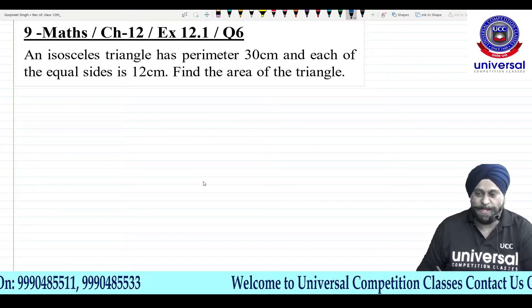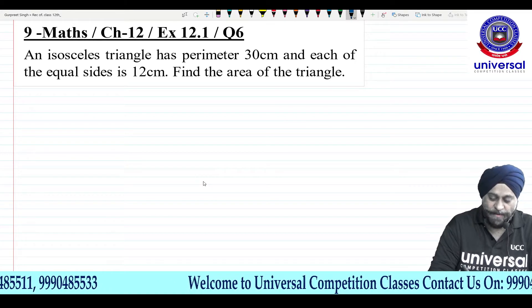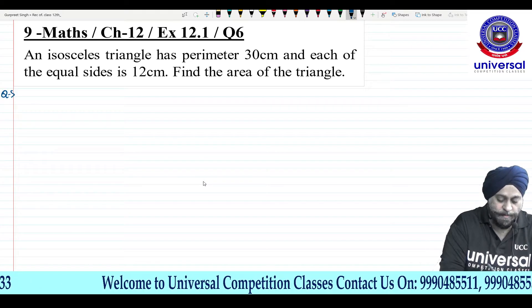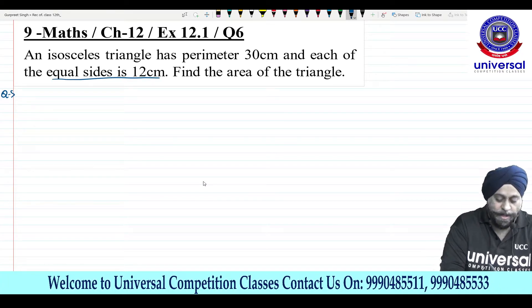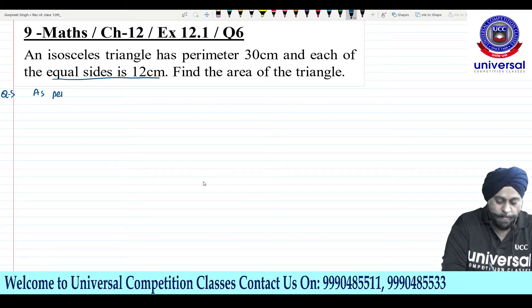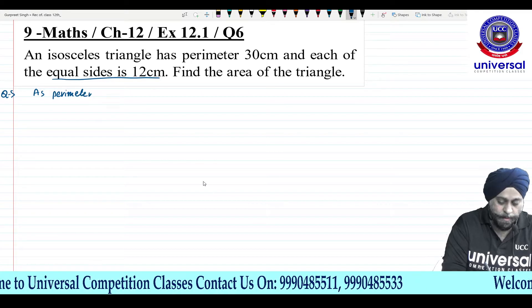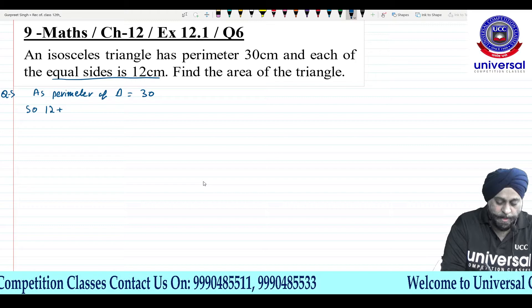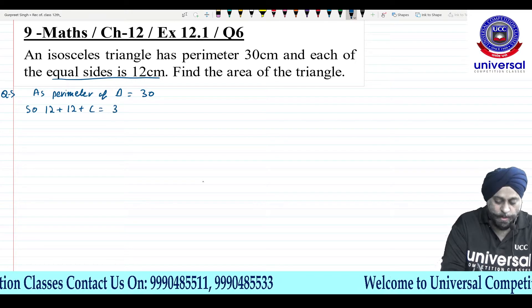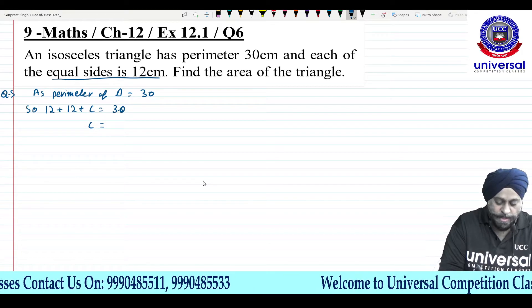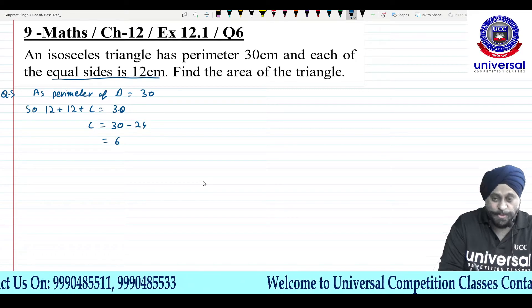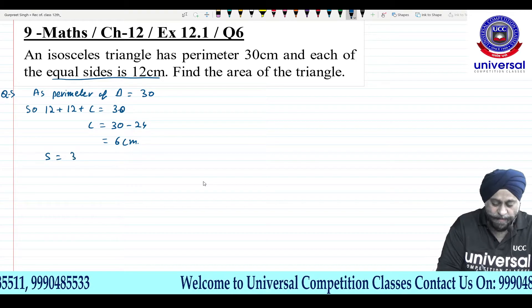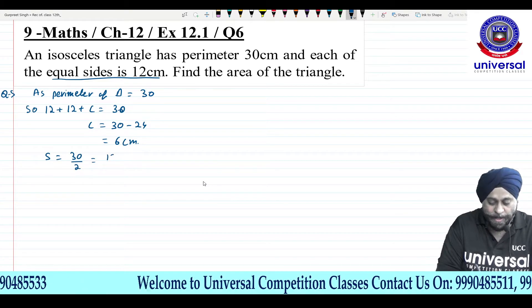Question 6: Almost the same working as before. It is an isosceles triangle — two equal sides of 12 cm each, and perimeter is 30 cm. So 12 + 12 + c = 30, giving c = 30 − 24 = 6 cm. Semi-perimeter S = 30/2 = 15 cm.